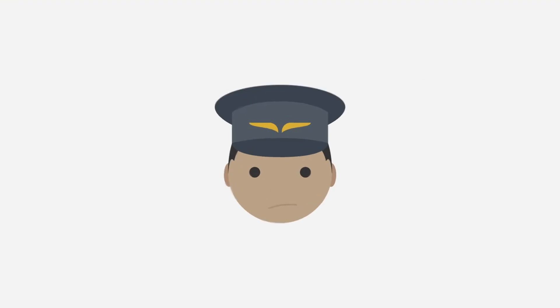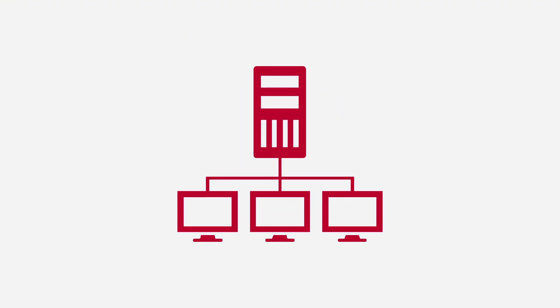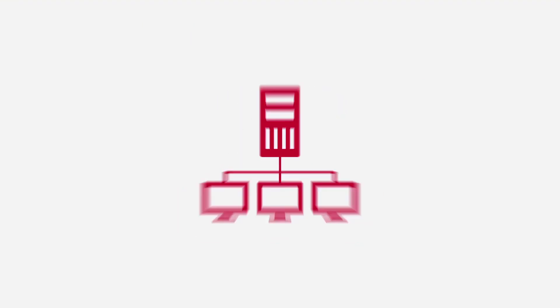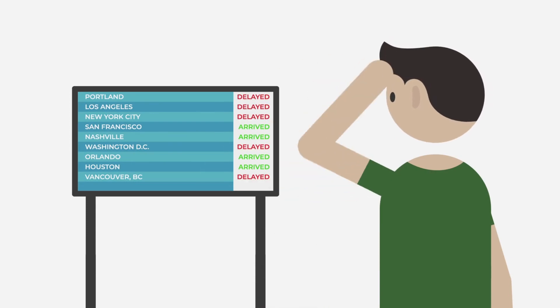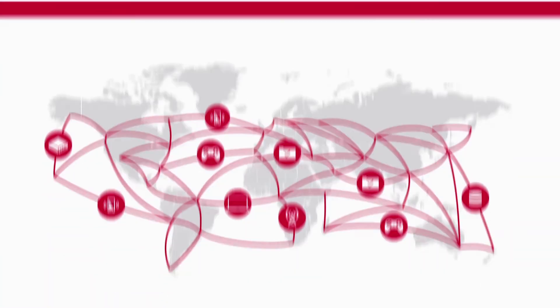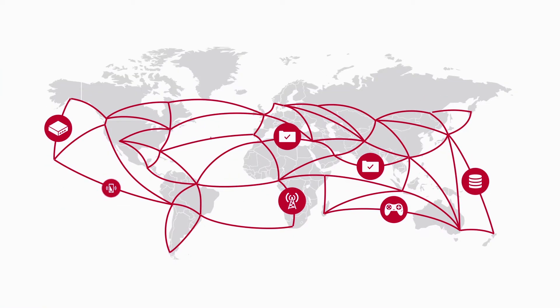The head of the airline, or the network operations team, doesn't know this happened until the passenger complains at that final destination. So how do we solve the problem of packet loss?